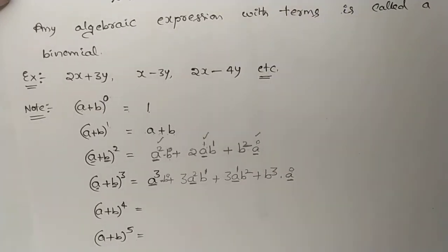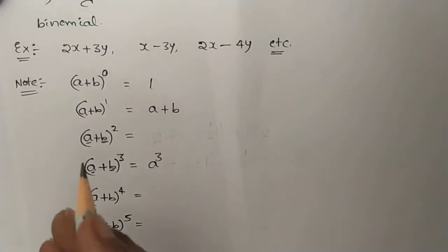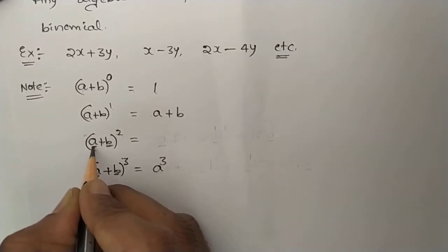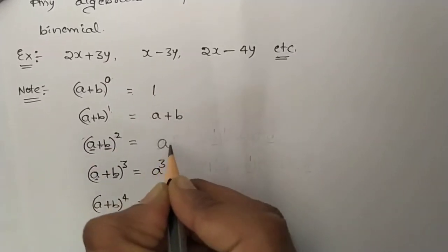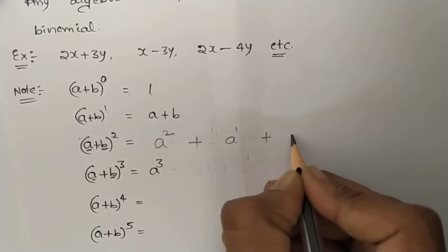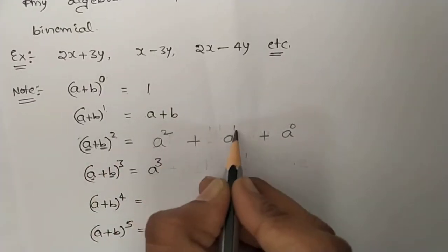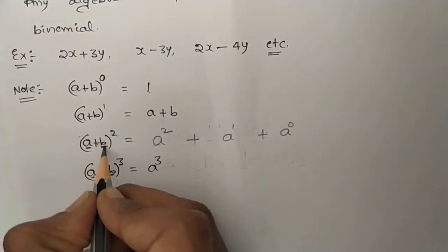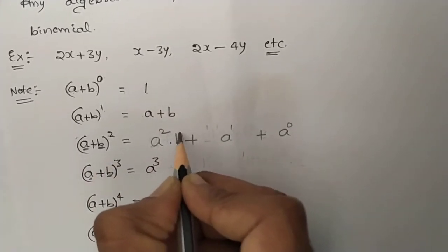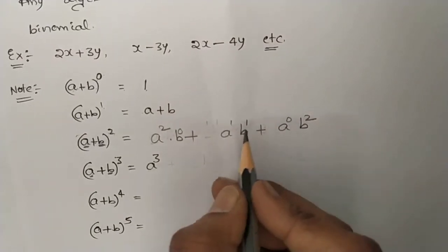Let me explain once again. In (a + b)², the power of the first term is decreasing: 2, 1, 0. The power of the second term is increasing: b⁰, b¹, b². We will learn about the coefficients later. The key idea: the power of the first term decreases and the power of the second term increases.